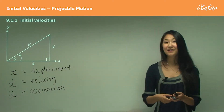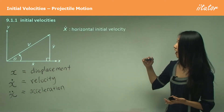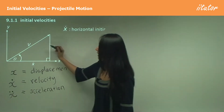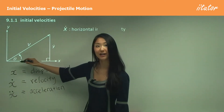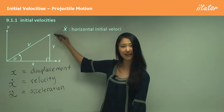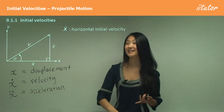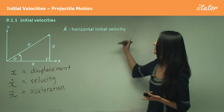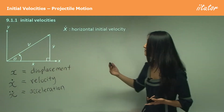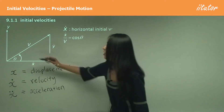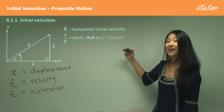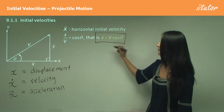Now let's look at the initial velocities, starting with the horizontal initial velocity. Looking at this diagram, you can see that the velocity, the angle of projection, the horizontal velocity, and the vertical velocity form a right-angle triangle. We can use cos theta — adjacent over hypotenuse — and multiplying v across gives us that the initial horizontal velocity equals v times cos theta.